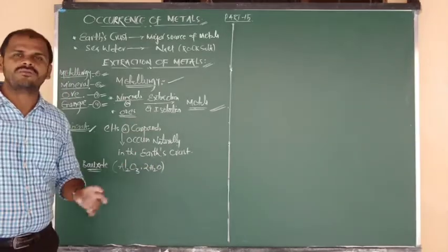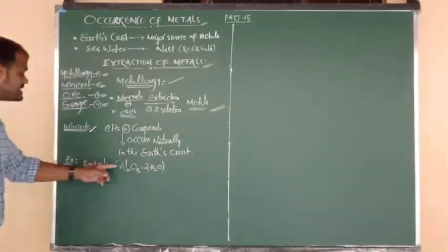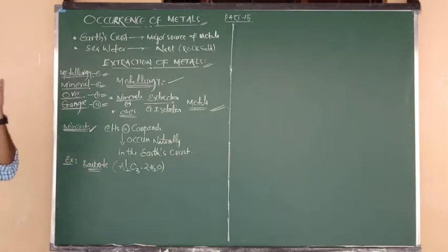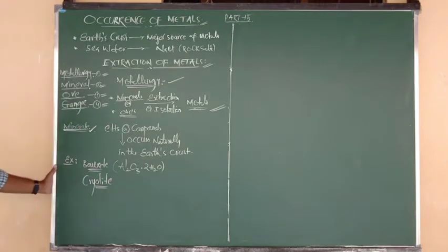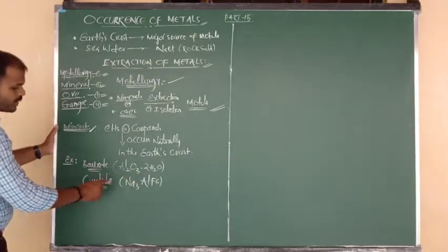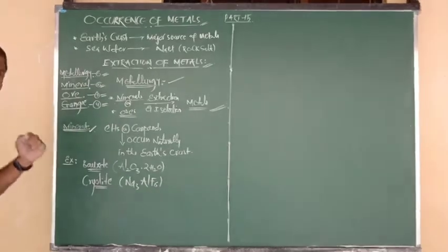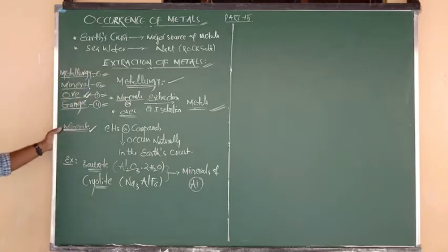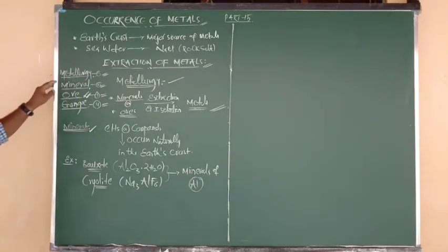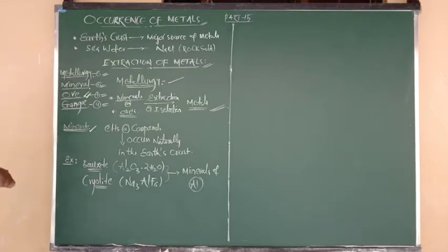How do metals occur? How can metals be found? Most of the metals and their compounds are available from the earth crust. Earth crust is the major source of metals — most of the metals, their minerals, and their ores are obtained from the earth crust.